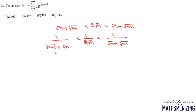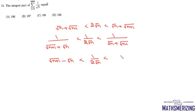Now we'll multiply with the conjugate. We can write √(n+1) − √n is less than 1/(2√n), and it is less than √n − √(n-1).